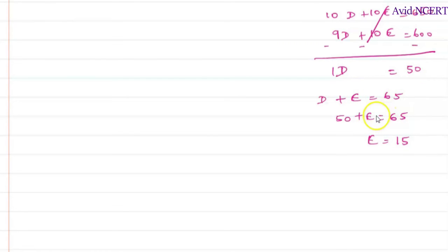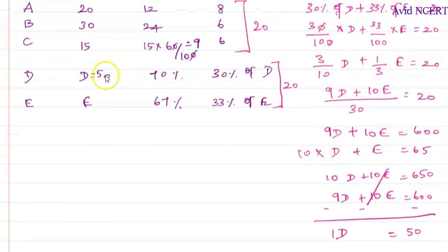So substitute this value here which is D equals 50 and E equals 15. 70% of 50 is 35, and E is 15, and 67% of 15 is 10. So now the remaining 30% of D is 50 minus 35, which is 15, and 33% of 15 or 15 minus 10 is 5.